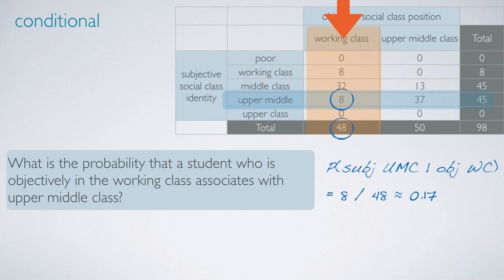When finding conditional probabilities from contingency tables, once you figure out what you're given, you can literally cover up the rest of the table because you won't need any of that other information. We know the type of student we're interested in objectively belongs in the working class, so we don't need to worry about students outside that column. All we care about are the students in that column, and from within that column, we use the counts to calculate the conditional probabilities.